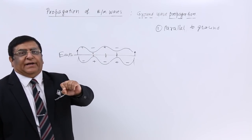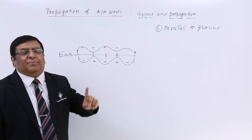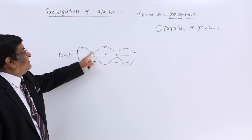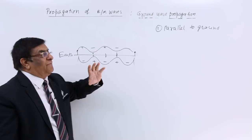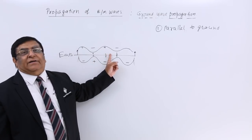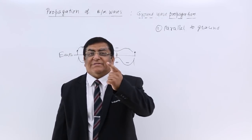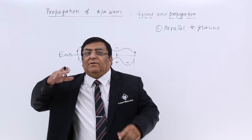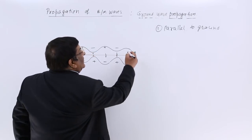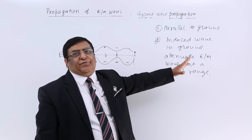Every field, whether positive or negative, would like to go to zero potential — that is, earth. A positive field is neutralized by the negative field. So if the field strength was 100 here, it becomes 70, then 50, then 30, then 0. This happens very fast, because the induced wave on the surface leads to attenuation. The induced wave in the ground attenuates this electromagnetic wave at a short range — therefore, ground wave is a short range communication.